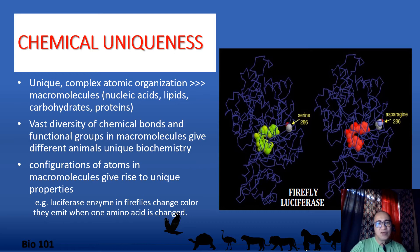The two images shown in this slide are stick models of the enzyme luciferase in Japanese fireflies — the enzyme responsible for the characteristic light emitted by fireflies at night. The color of light emitted by luciferase is normally greenish-yellow. But when an amino acid in the luciferase cofactor was changed from serine to asparagine, the color of light emitted changed to red. Changing just one amino acid drastically changed the protein's function and perhaps compromised the reproductive success of the fireflies.